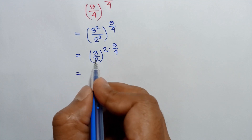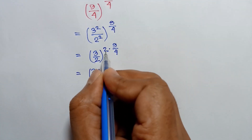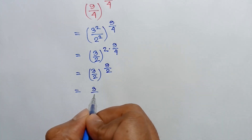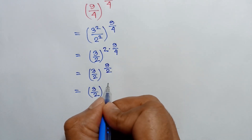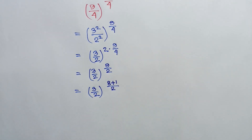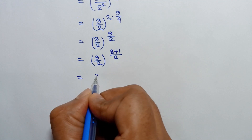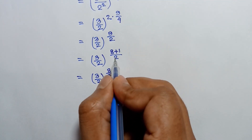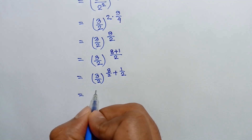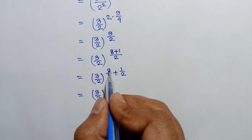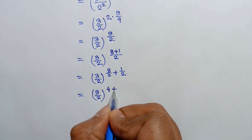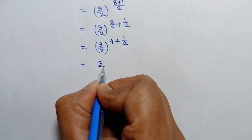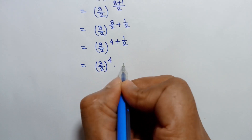This is equal to 3 over 2, whole to the power 2 times 9 over 4, which is 9 over 2. This equals 3 over 2, whole to the power 9 over 2. Now 9 can be written as 8 plus 1, so over 2 this gives us 8 over 2 plus 1 over 2, which is 4 plus 1 over 2.